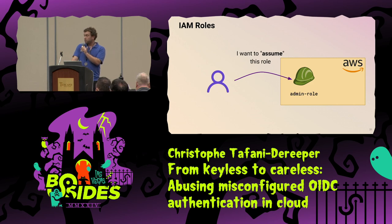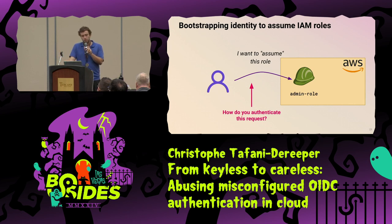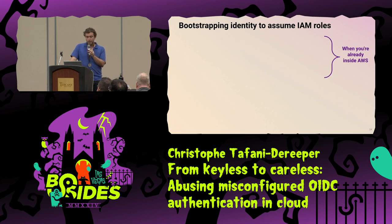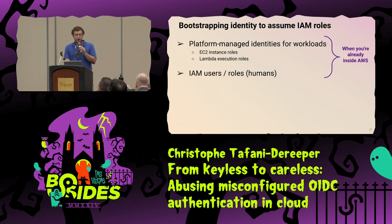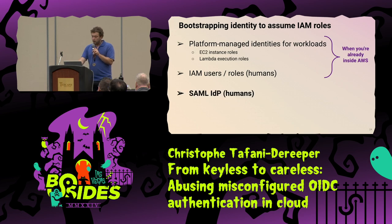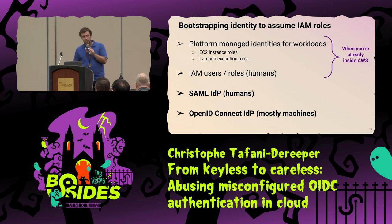You say you want to assume this role — that's the term — and you get back time-bound credentials that expire after at most 12 hours. The question is who can take credentials for this role, and that's where the trust policy comes in. The easy use cases are when you are already authenticated in AWS — like an EC2 instance or Lambda function. The tricky part is when you don't have an identity in AWS yet. For humans it's mostly SAML IDPs; for machines it's OpenID Connect IDPs.